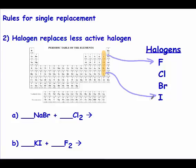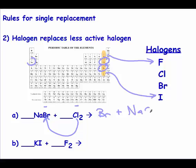We have a compound and an element, but this time our element is a non-metal, so it has a negative charge. Negative charges kick out negative charges. Chlorine is trying to kick out bromine. You look on the periodic table and chlorine is above bromine, so bromine gets kicked to the curb. Sodium is going to combine with chlorine — sodium is a plus one, chlorine is a minus one, so it's just NaCl. Remember that bromine is one of the seven diatomics, so we need a Br₂. To balance, we need two bromines, which causes us to need two sodiums.